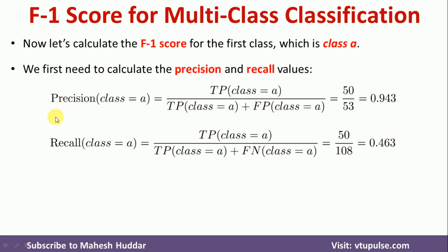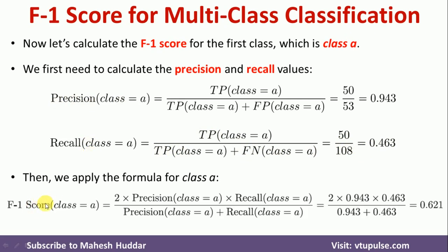Once we have calculated precision and recall for class A, we can calculate the F1 score for class A: 2 times precision (class A) multiplied by recall (class A), divided by precision plus recall. Substituting the values into this equation, we get F1 score for class A equal to 0.621.